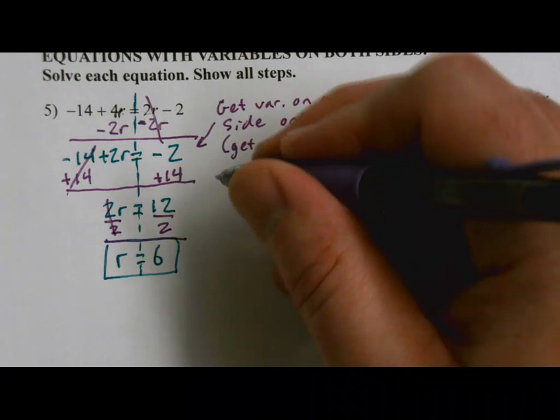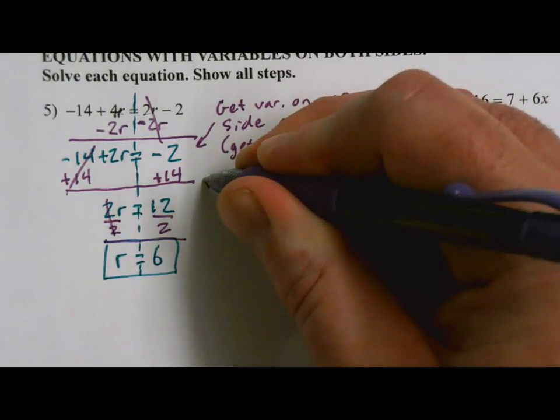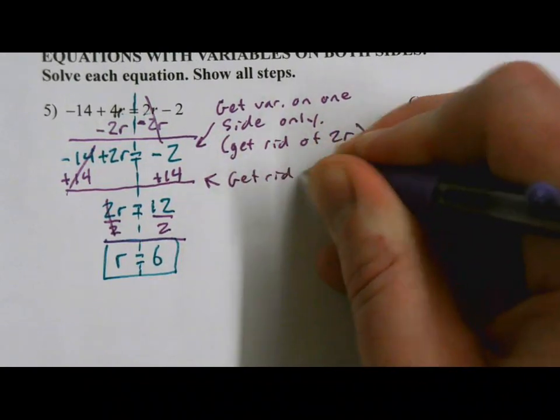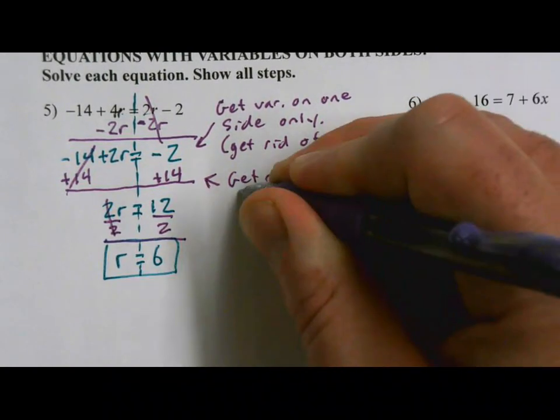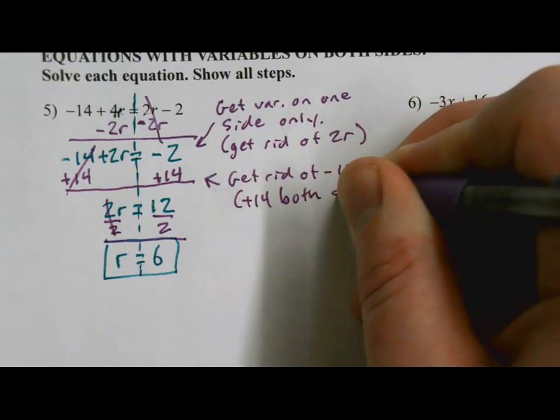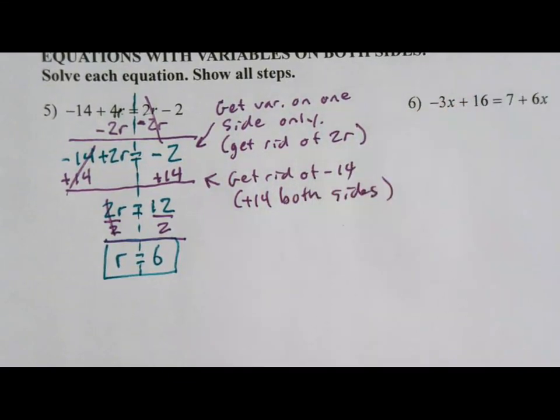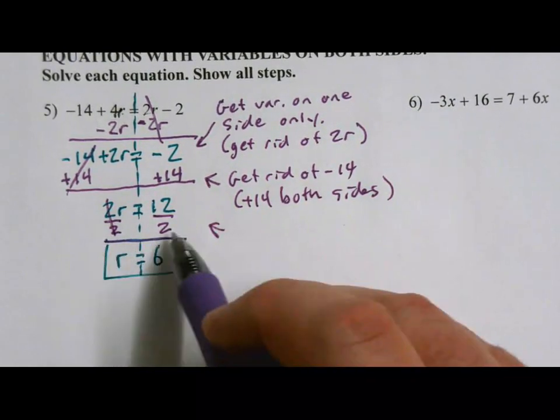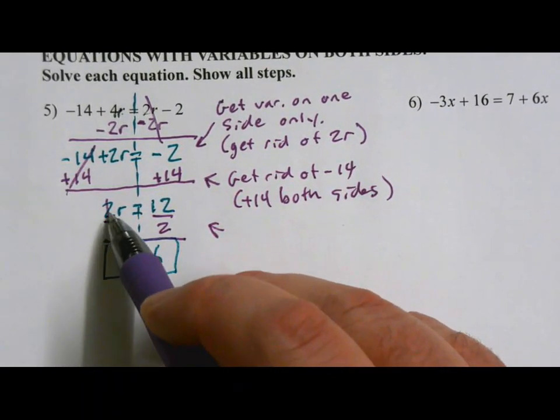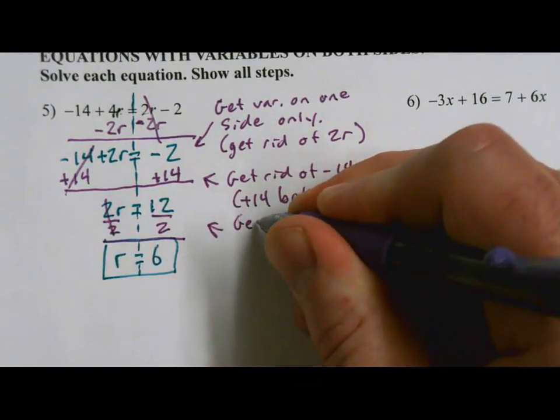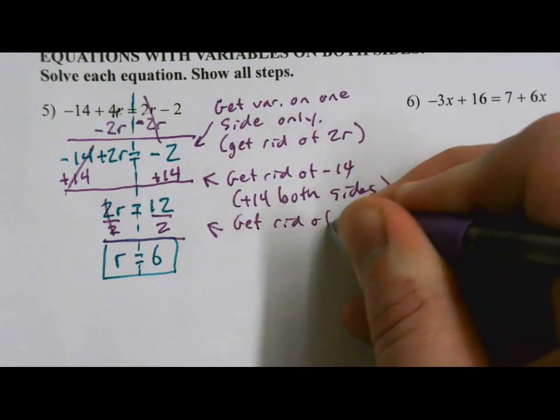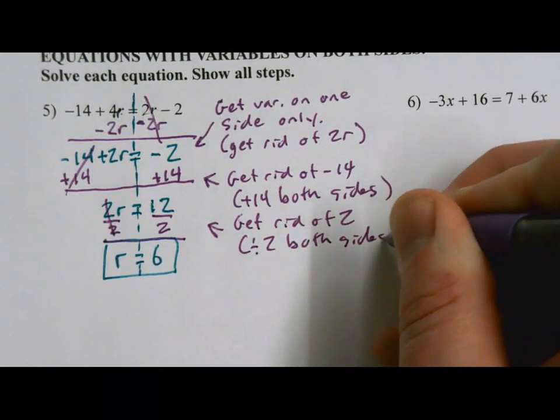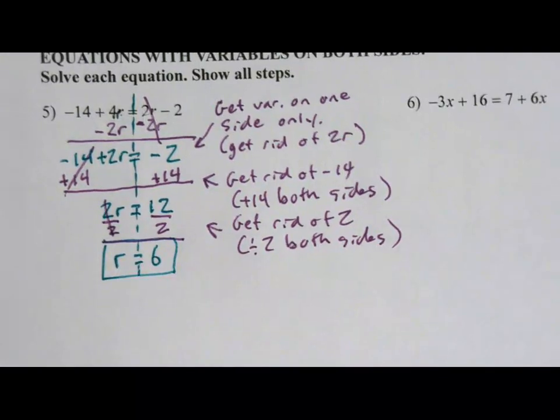I forgot to annotate as I was going, so we'll go back and finish it up. What did we do here? We did plus 14 on both sides. That was to get rid of the negative 14. And in our last step, what were we doing here? We were dividing by 2 on both sides. That was to get rid of the 2 that was multiplying by the r, so we got rid of 2. And that got r by itself.